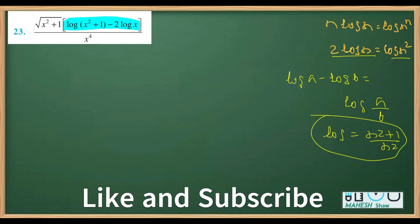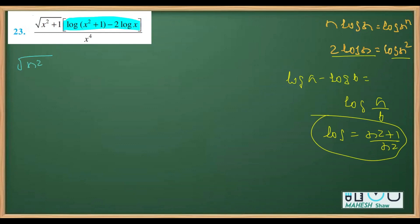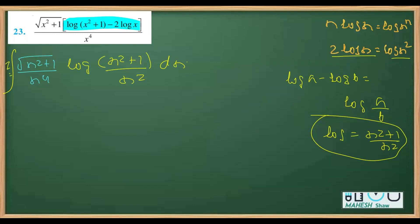So in the first part I'll write this as x² over 1 divided by x⁴, and the other part simplifies to log(x² + 1) over x². So I is this integration dx. Now for one more part of simplification — I can write x² + 1 as just x² + 1.